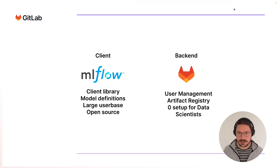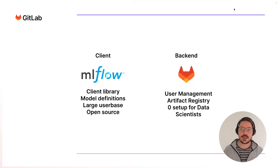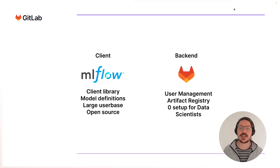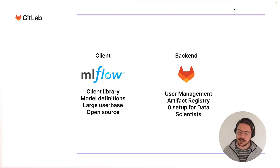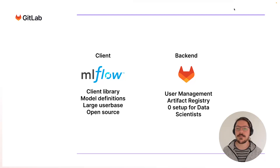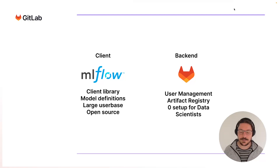That's where GitLab comes in. We use the MLflow client and re-implement it on the GitLab side — we made GitLab act as an MLflow backend. MLflow experiments are tied to a GitLab project, giving you user management. If you want to track artifacts, you can log them directly into the GitLab package registry. Data scientists don't need to set up anything — you just change your URL and it automatically works with GitLab.